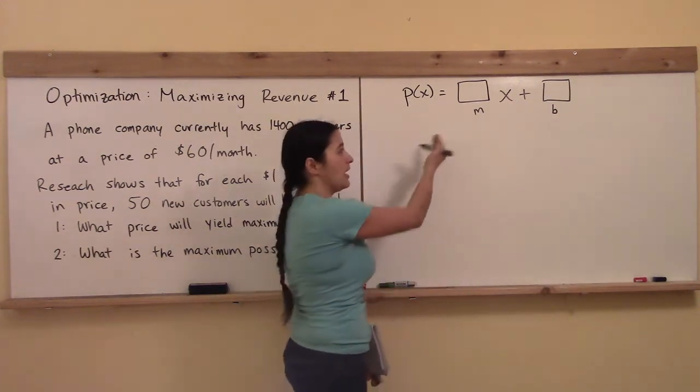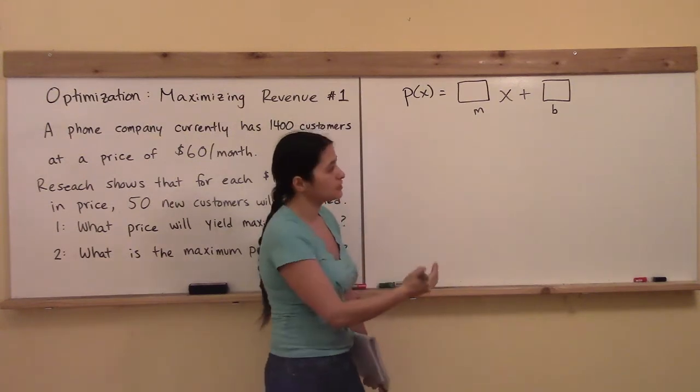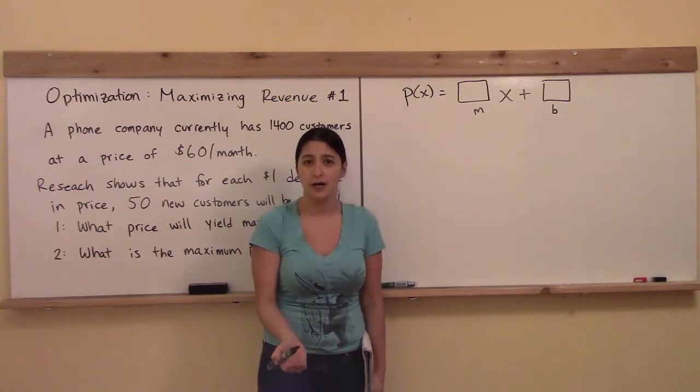then I could use my trick to get m, y2 minus y1 over x2 minus x1 and then I could solve for the b. This would just be a whole lot easier if I had two points, am I right?